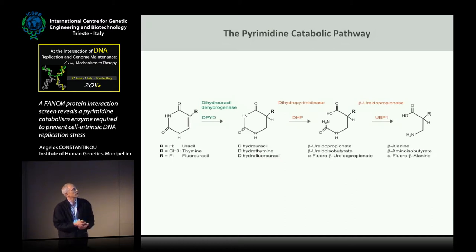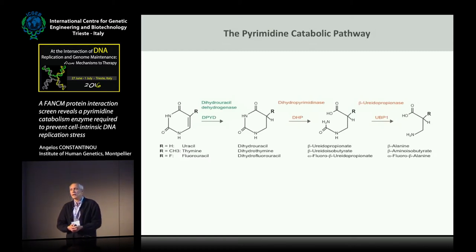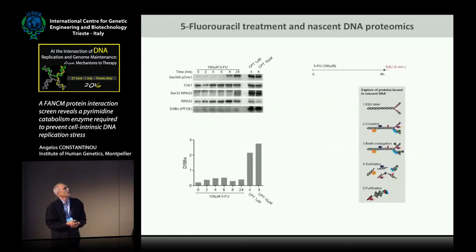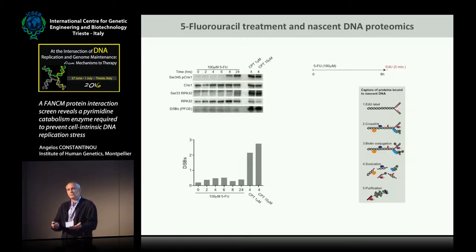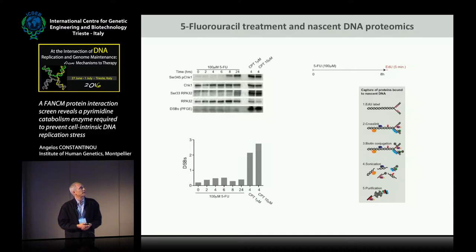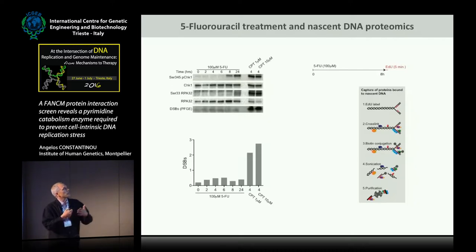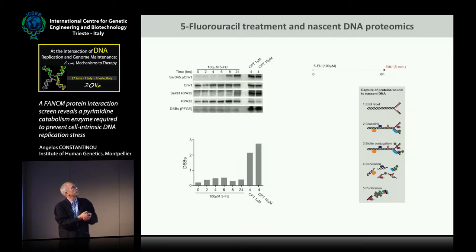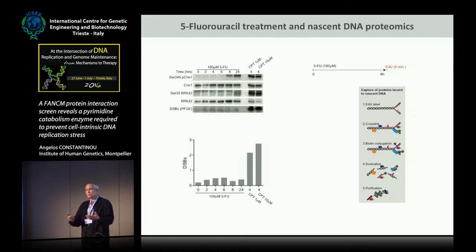5-fluorouracil is converted to an anti-metabolite by cellular enzymes into fluoronucleotides that will misincorporate into RNA, DNA, and block thymidylate synthetase. We are also pursuing a systematic characterization of proteins that accumulate in the vicinity of replication forks in cells exposed to various chemotherapeutic agents using the beautiful iPOND method developed by the Cortez laboratory. Within this screen, we identified FANCM as a protein enriched at forks upon exposure to 5-fluorouracil—the first time we detected FANCM near forks using an unbiased screen.